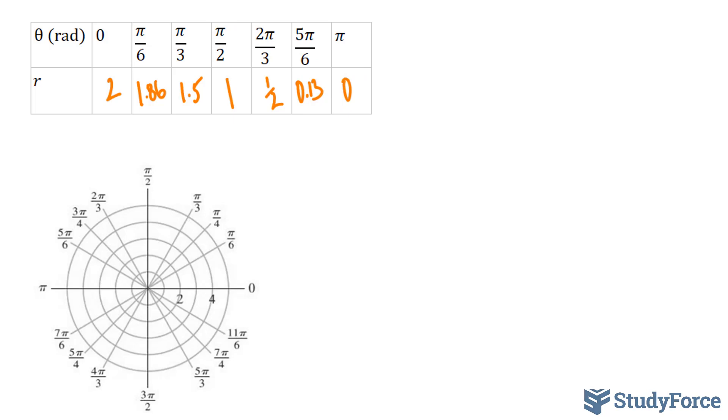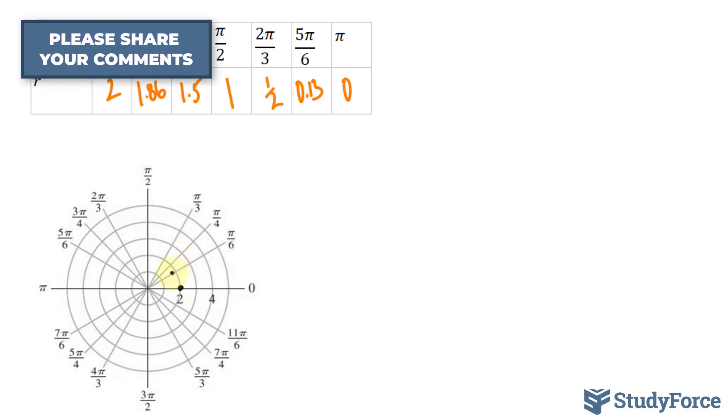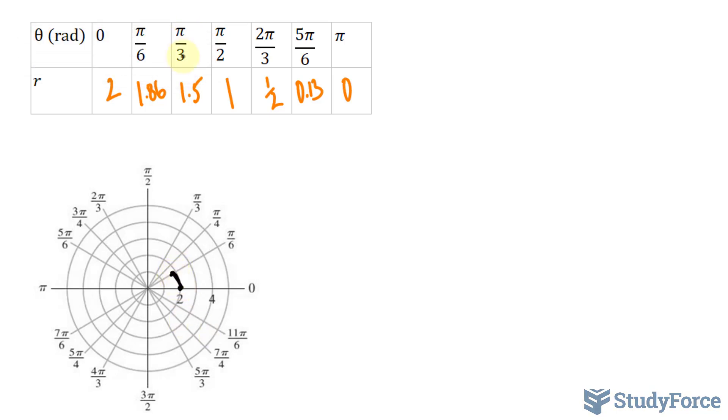Let's plot these points. At 0 and 2, that's right here. At pi over 6, it's 1.86, which is just a little bit less than the second ring. So I'll connect these. Pi over 3 is 1.5, which is in between this ring and this ring. I'll zoom in in a moment.